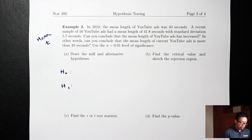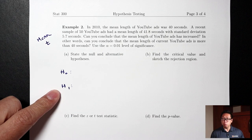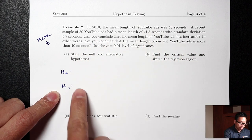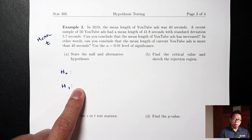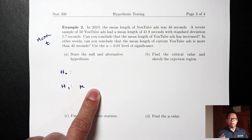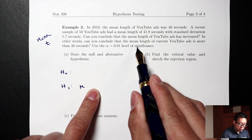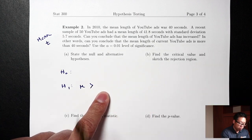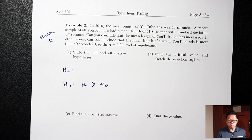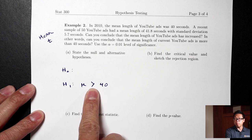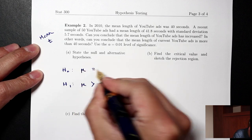For means, we use the mu symbol. H1 usually comes from the question: can you conclude that the mean is more than 40? So H1 is mu greater than 40. H0 is exactly the same with an equals in the middle: mu equals 40. The null hypothesis always has an equals in the middle.